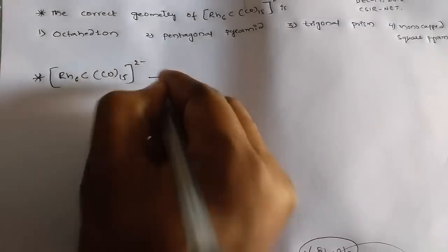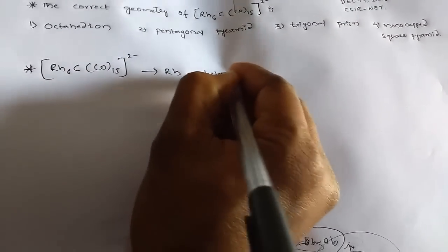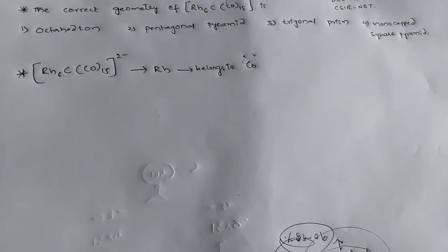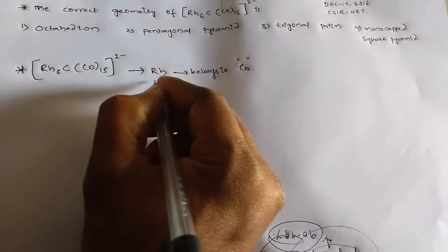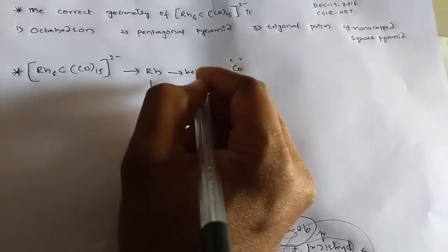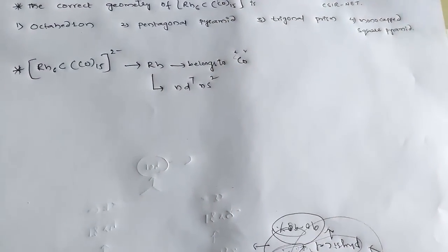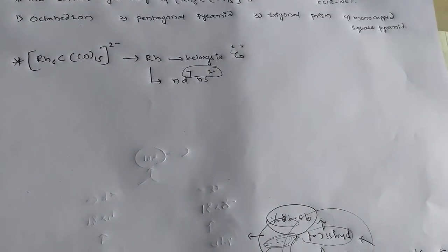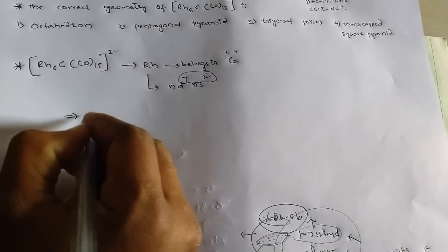Right, rhodium belongs to the cobalt group of d elements. So rhodium has nd7 and ns2 electronic configuration. That means it has nine valence electrons. How many rhodium are there? Six.